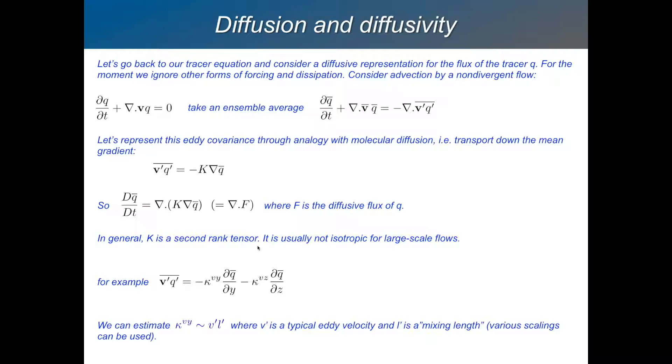Because this K, it's a matrix and not necessarily all the terms in the matrix will be the same. Diffusion in some directions might be stronger than other directions. So for example, we've got V prime Q prime bar. It's going to have a coefficient in front of the meridional gradient, another coefficient in front of the vertical gradient, for example. And these coefficients come from turbulence theory.